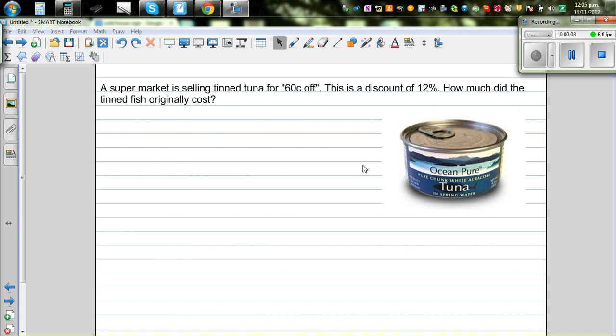In this video I want to talk about application of percentages using proportional thinking. Let's look at this question. The supermarket is selling tinned tuna for 60 cents off.